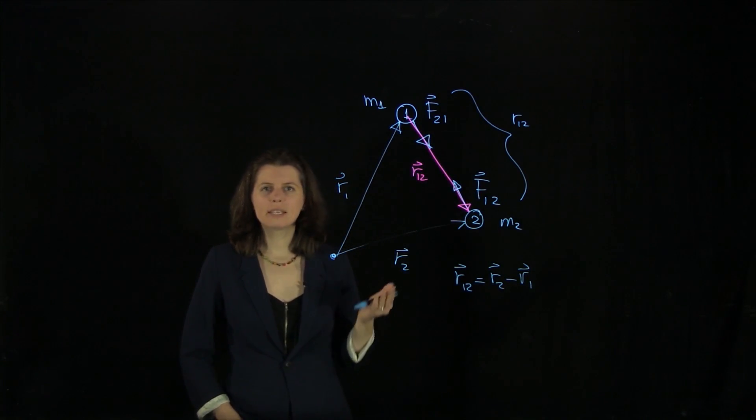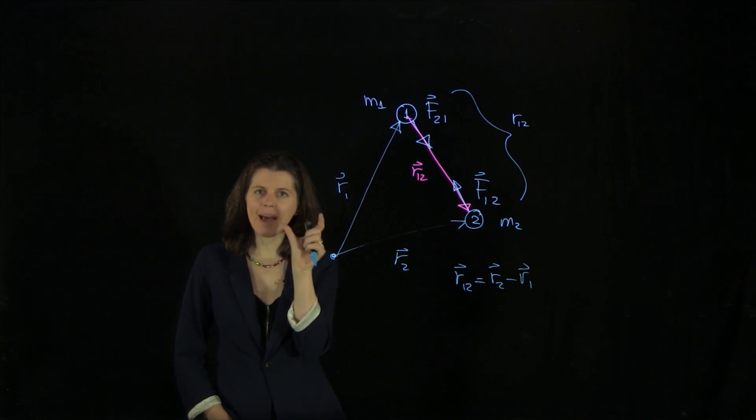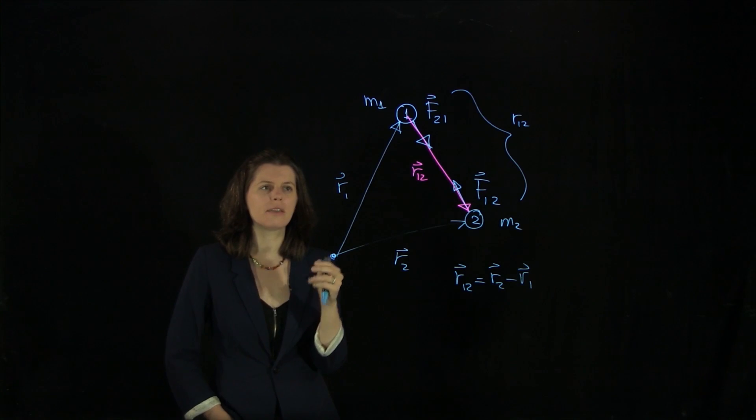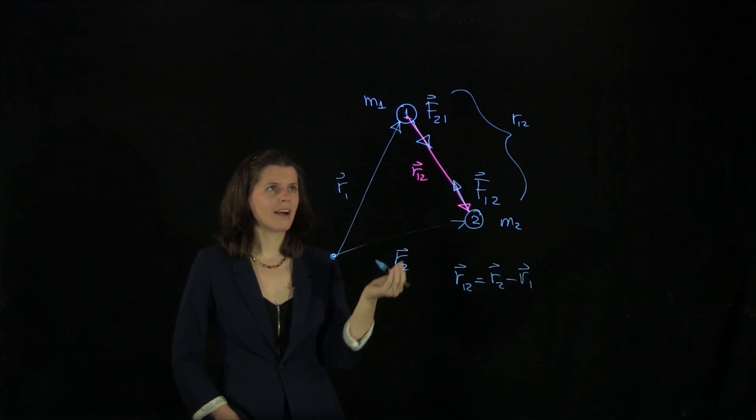Now, if we want to write down the universal law of gravitation, there is a magnitude component to it, and we also need a direction. And we haven't yet chosen a coordinate system.